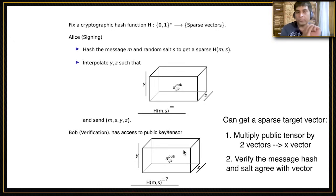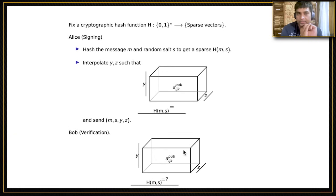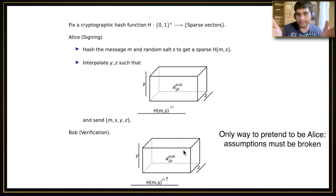We can prove rigorously the only way anyone can pretend to be Alice and sign a message is by breaking one of the assumptions we have. If someone gives you a random tensor, they can compute preimages with respect to that tensor, or they can distinguish random tensors from the public tensors. This is the bare bones skeleton of the scheme.